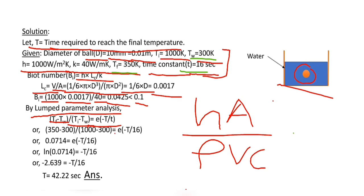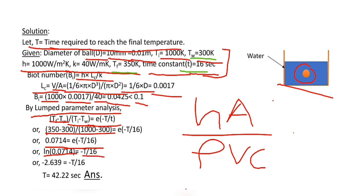Now we put the values and it becomes 0.0714 equals e to the power minus T divided by 16. When we take natural log on both sides, ln of 0.0714 equals minus T by 16. From here, the time required T equals 42.22 seconds.